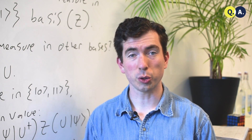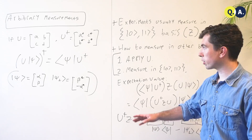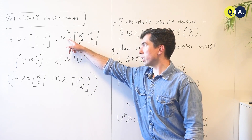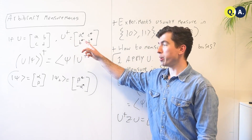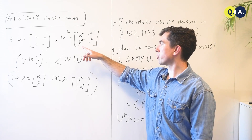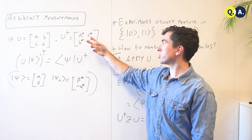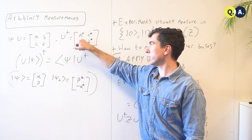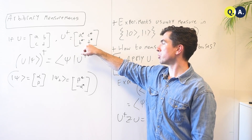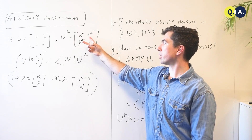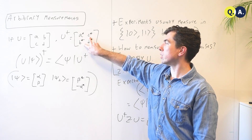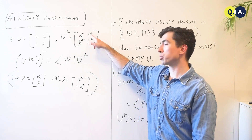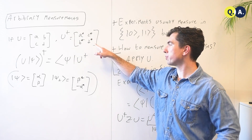First, we have to review a few of the important facts. The conjugate transpose of a matrix or vector is given by first taking the transpose — so for this 2x2 matrix, that leaves the diagonal elements in the same place and exchanges the elements b and c — but also taking the complex conjugate of each element in the matrix.